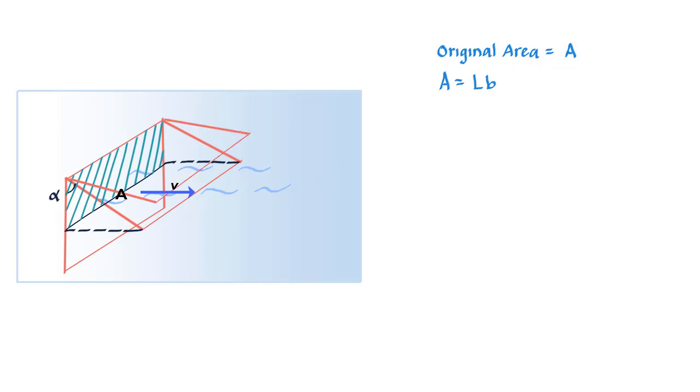If you keep increasing angle alpha, the flow of water through the area keeps decreasing till it becomes zero when the rectangle is parallel to the flow of water or the velocity vector v.